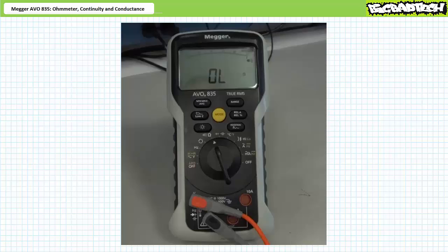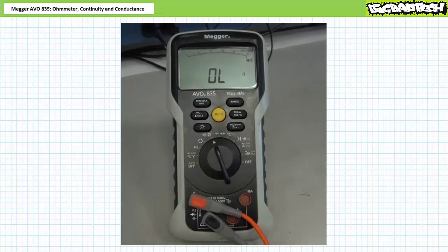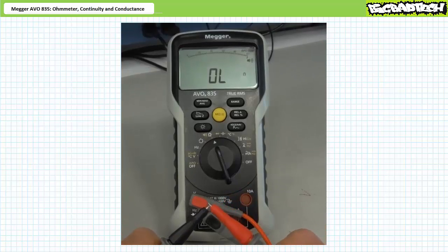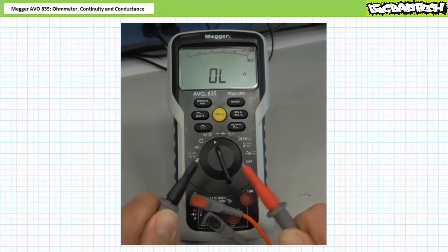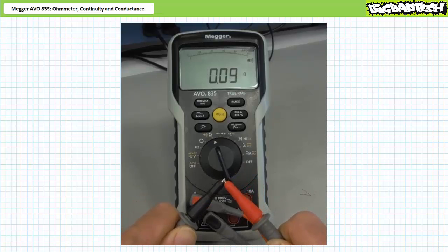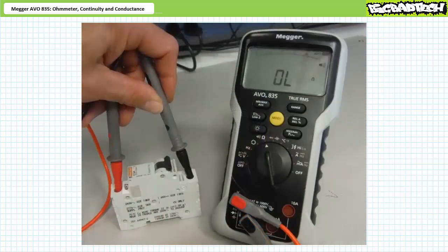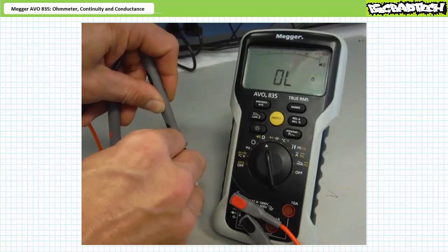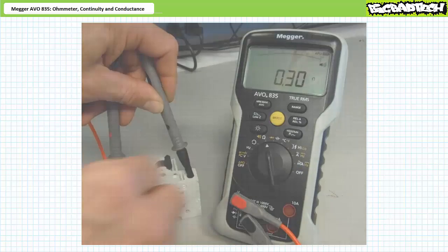To place the AVO835 into audible continuity test mode, press the yellow mode button in the center while in ohmmeter mode. When the probes are separated, the DMM is silent. When I touch the probes together, the DMM produces an audible tone. The audible continuity test mode is pretty handy because you can check the continuity of a mess of wires without ever having to glance up and look at the screen and interpret numbers. Let's use the audible continuity tester to check the continuity of a circuit breaker, a type of heavy-duty switch. With the circuit breaker open, the audible continuity tester remains silent. When I close the circuit breaker, the audible continuity tester indicates that continuity exists.